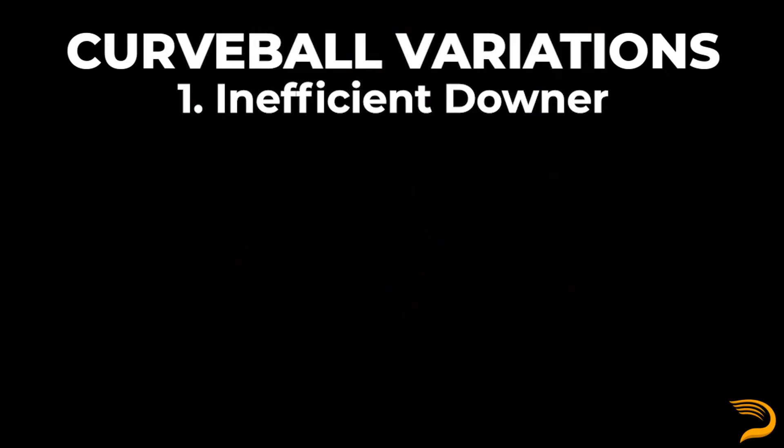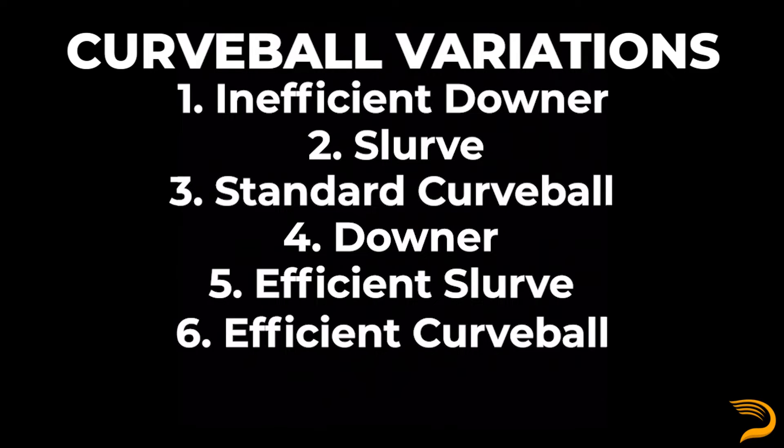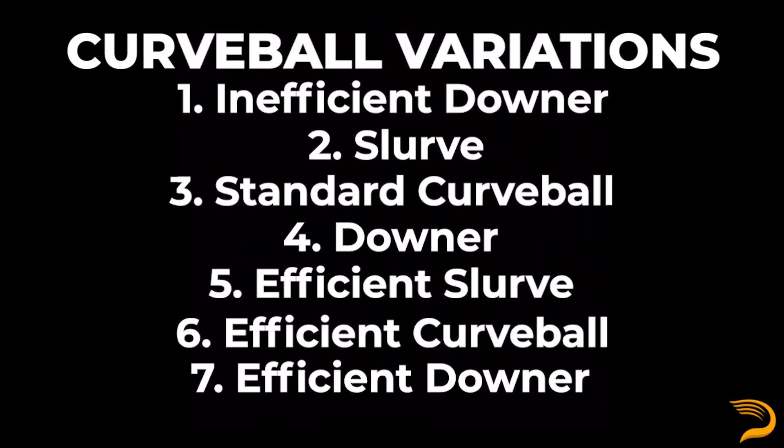If you combine those two together and do a little bit of math, you're going to come up with nine categories. Of those nine categories, there are two pitches — the gyro curveball and the inefficient slurve — which to the hitter's perception actually tend to play a bit more like a slider. In addition to these, we've also got our more prototypical or traditional curveball profiles: the inefficient downer, the slurve, the standard curveball, the downer, the efficient slurve, the efficient curveball, and the efficient downer.